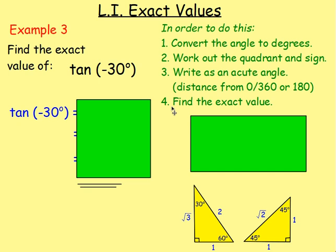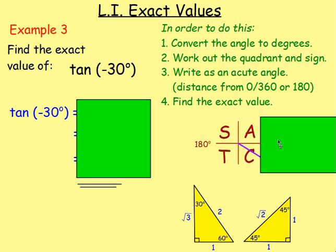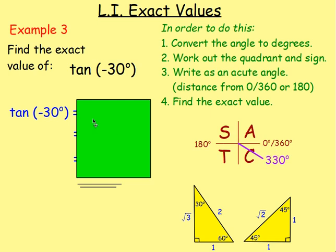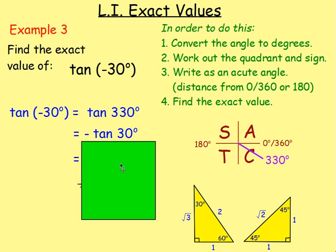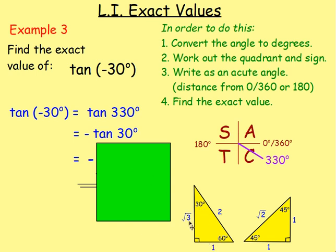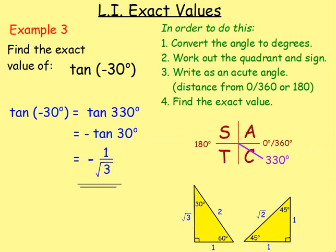Find the exact value of tan of negative 30 degrees. We're already in degrees. Since sine, cos, and tan repeat every 360 degrees, add 360 to get tan 330 degrees. The acute angle: 330 is 30 degrees away from 360. And tan is negative in that quadrant, so it's negative tan 30. Keeping the negative: tan of 30 is opposite over adjacent, which is 1 over root 3. Answer: negative 1 over root 3.